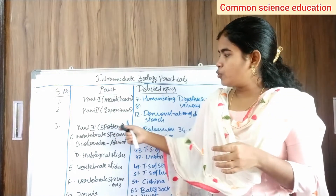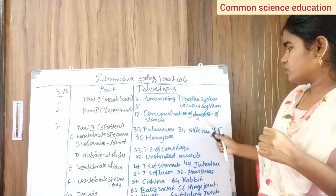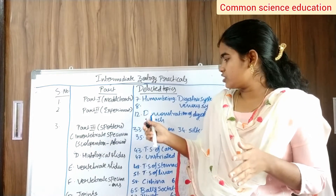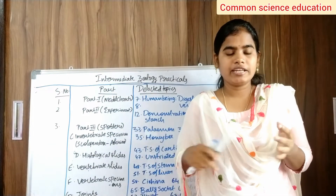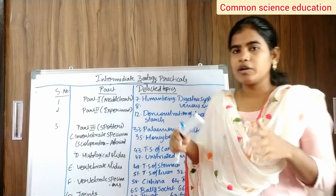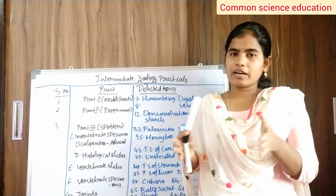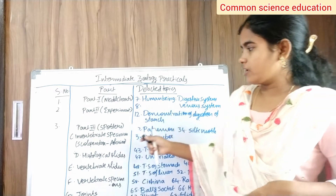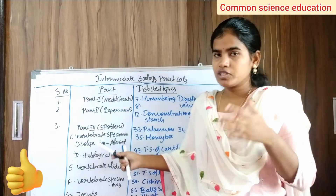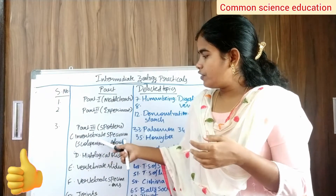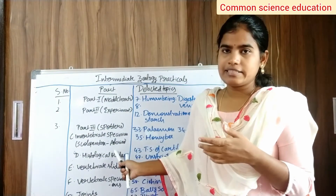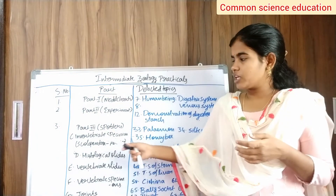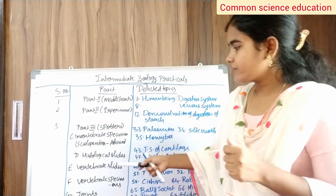For Part 2, the experiment: one experiment is deleted. The experiment is demonstration of digestion of starch. This is from Unit 1, digestive system. The experiment number is 12. For Part 3, specimen spotters: first are invertebrate specimens — scolopendra to asterias. Number 33 is paleomoth, 34 is silk moth, and 35 is honeybee. Draw diagrams for these three invertebrate specimens.